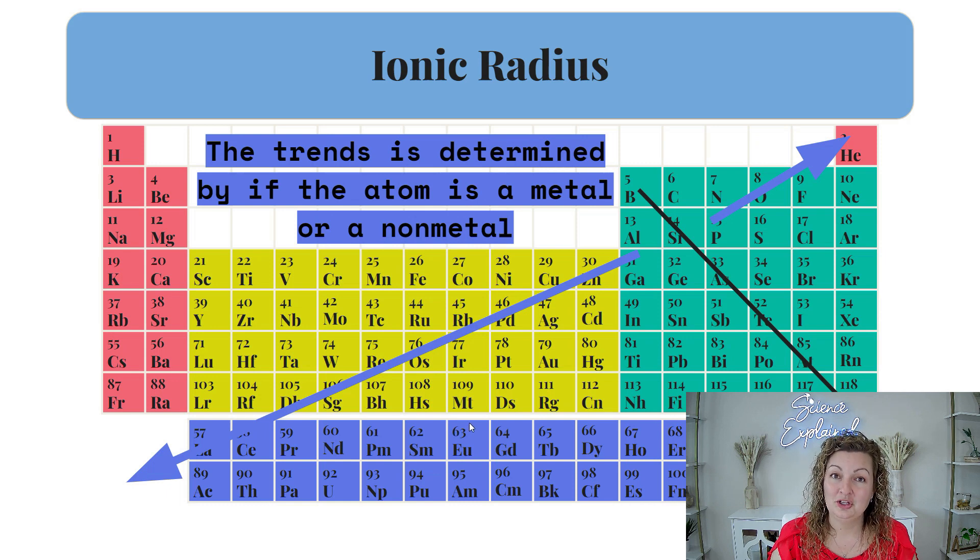So it does follow with metals and non-metals accordingly because metals will form cations because they're giving away electrons. And if you're giving away electrons, remember you are decreasing in size and non-metals will become anions, which means they're taking in or gaining electrons. And if you're gaining electrons, that means you are getting larger in size.